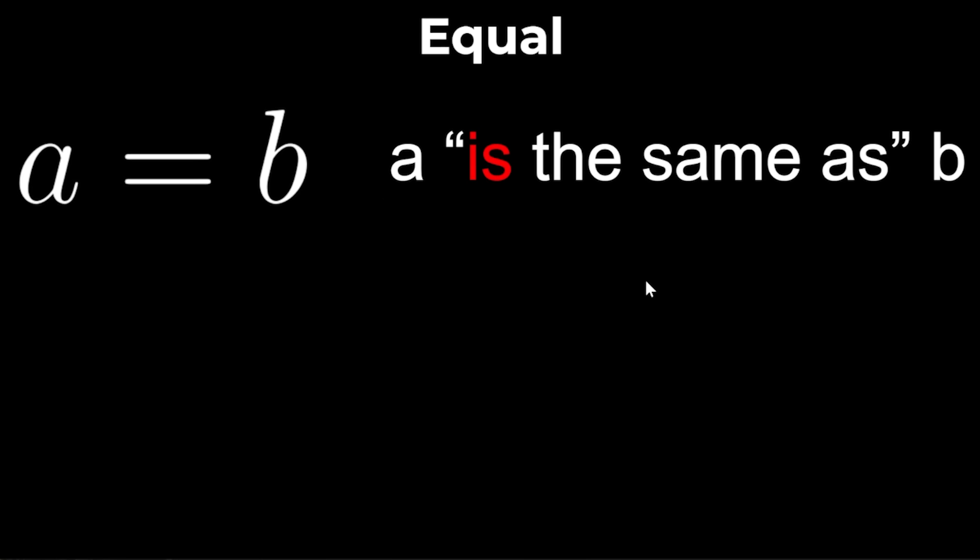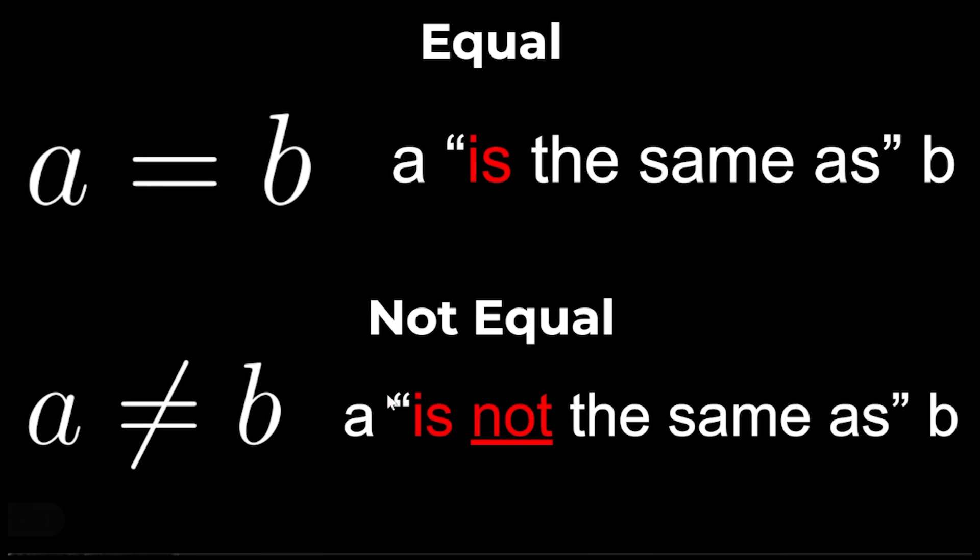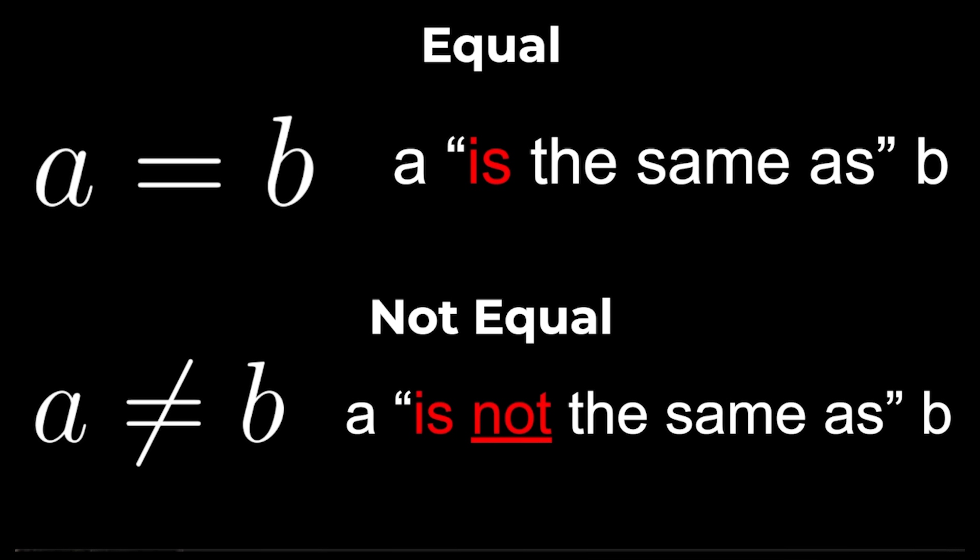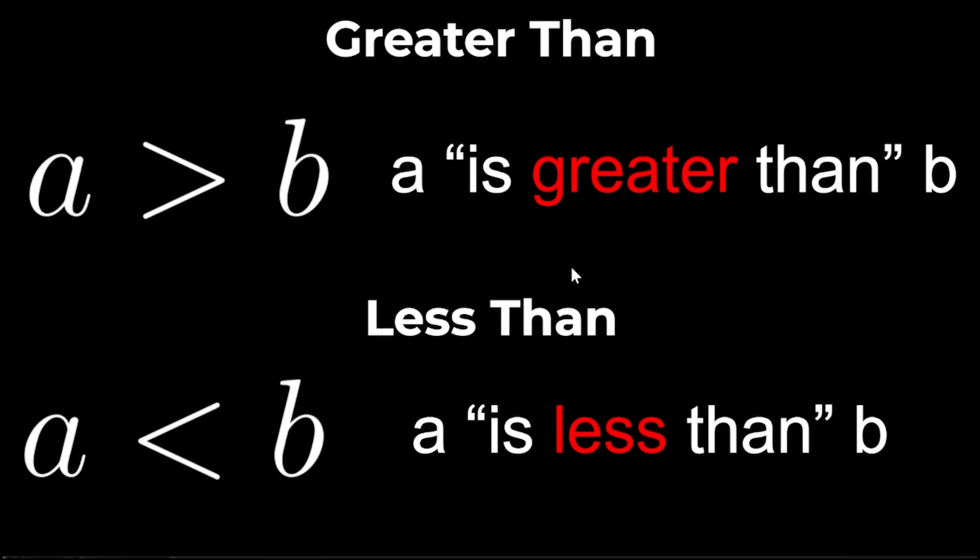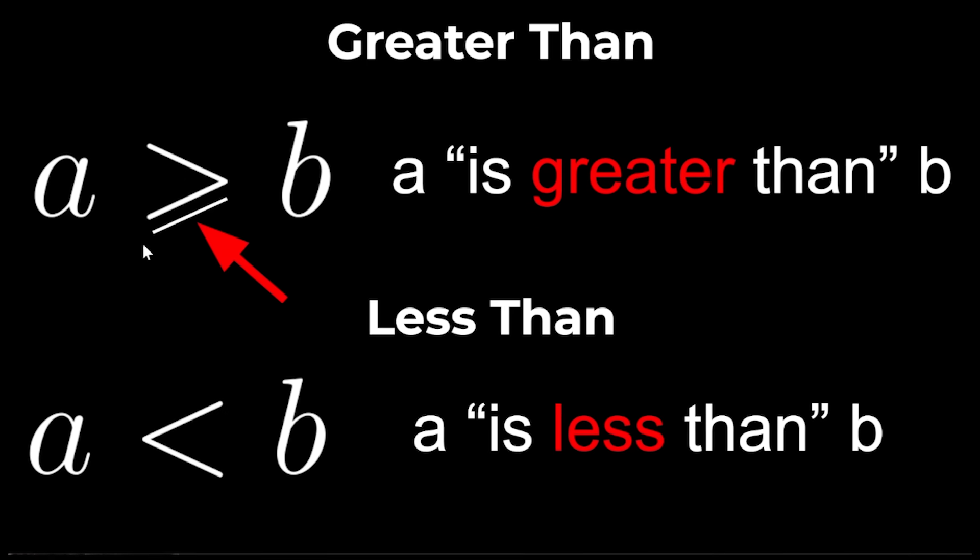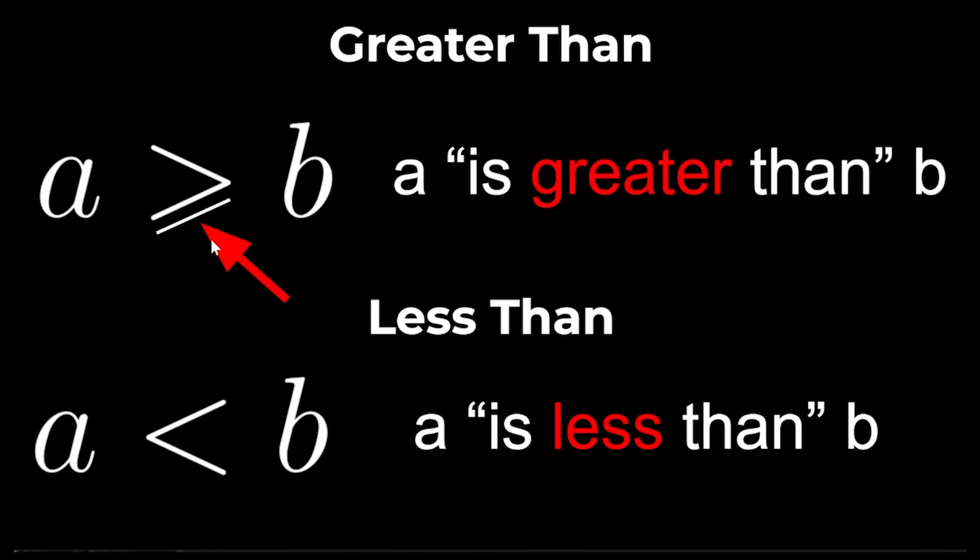Equal: If A equals B means A is the same as B then A not equals B means A is not the same as B. But we can get more specific than that. We can write A is greater than B or A is less than B and we can even put a little line here to indicate that A is greater than or equal to B.